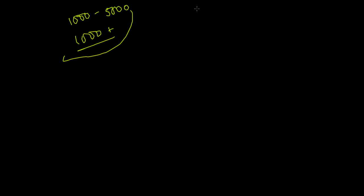For 1000, we use the letter M. Now, what can come before M represents subtracting that number, and what comes after M represents adding that number. So if you write to the left of M you're subtracting; if you write to the right of M you're adding.